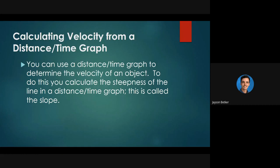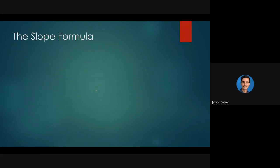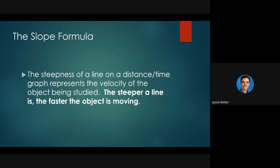You can use distance-time graphs to determine the velocity of objects — what you need to do is calculate how steep the line is. That hockey puck had a steeper line, which meant it was going faster than the lawnmower. Mathematically, we call that the slope. The slope formula tells us the steepness of a line, and the steeper the line, the faster the object is moving.